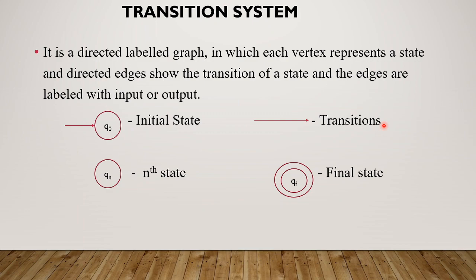The first method is the transition system. This is a short concept but very important. A transition system is a graph representation — it is a labeled graph, specifically a directed labeled graph.